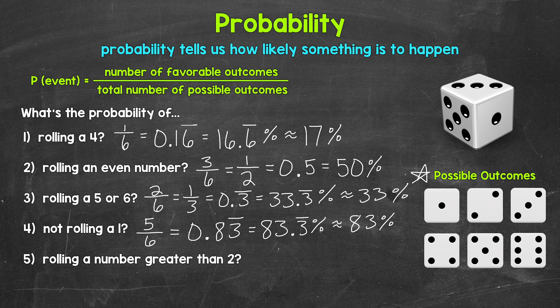And lastly, number five: what's the probability of rolling a number greater than two? We have three, four, five, and six — that gives us four favorable outcomes. So we have four favorable outcomes over six, the total number of possible outcomes. Our fraction is four over six — four sixths. We have a four out of six chance of rolling a number greater than two.